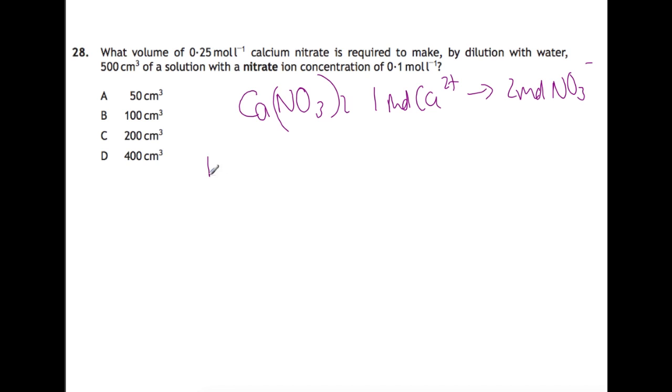So for every one mole of calcium ions, you have two moles of nitrate ions. So we need to keep that in mind for the next part of our calculation. So first of all, we're going to calculate how many moles of nitrate ions we would have in our solution that we're going to make. So it's going to be 0.1 times 0.5, which is 0.05. So for every two moles of nitrate ions, we have one mole of calcium ions. So we're going to half this. So if we divide that by two, so we're going to have 0.025 moles of calcium nitrate, because for every one mole of this, it splits up into these ions.